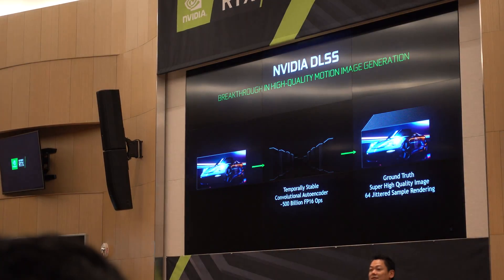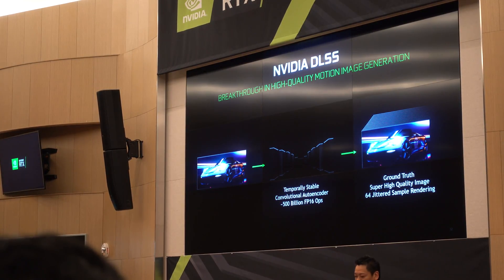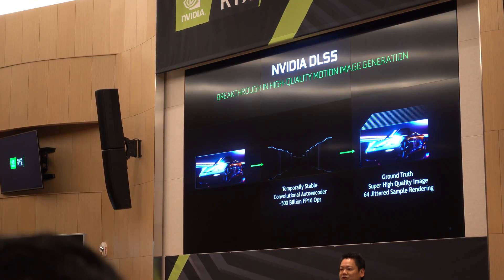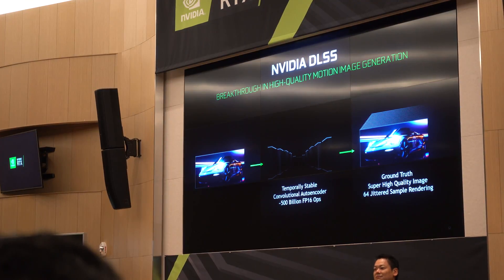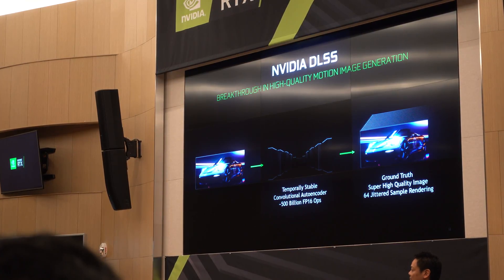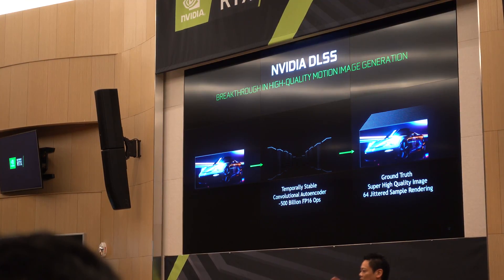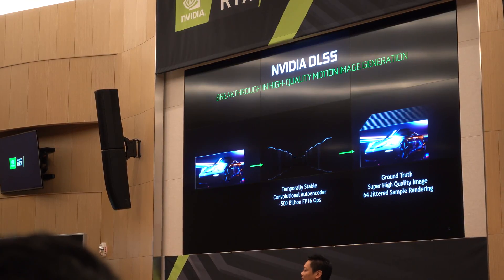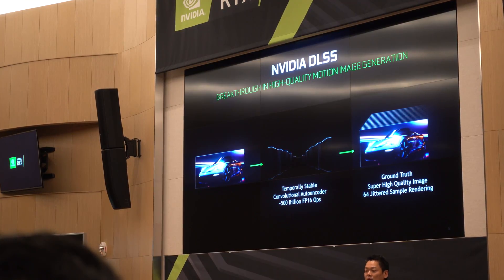We've announced something called DLSS, or NVIDIA DLSS. What we do is take what we call Ground Truth — a very, super high quality image — and train a network with it. We're then able to use a lower-resolution image, basically from a game, and run it through the trained model so that you get super high quality output with better performance.